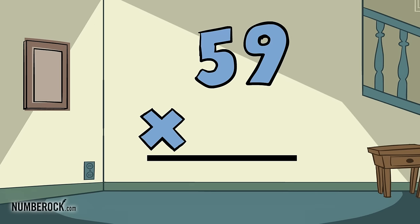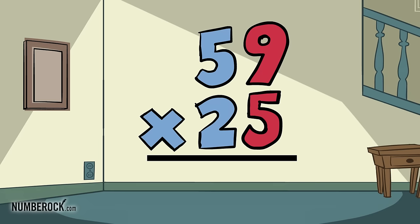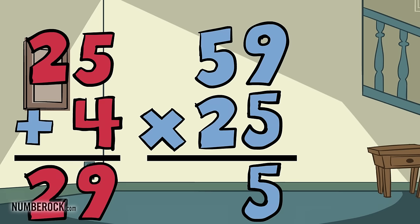Here is how you multiply 59 by 25. 5 times 9 is 45. Carry the 4 and write the 5. 5 times 5 is 25. Then add the 4 and it's 29.